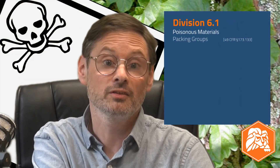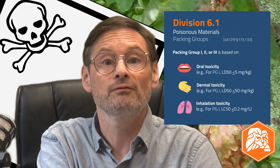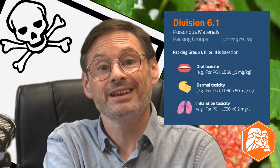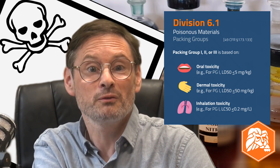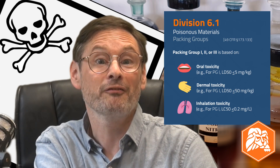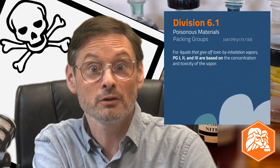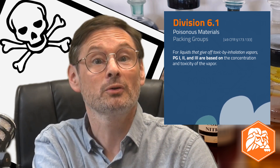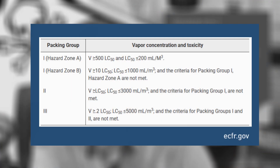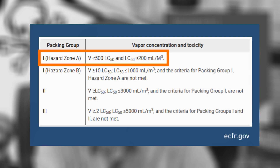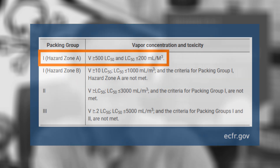For division 6.1 poisons, PG 1, 2, and 3 assignments are based on oral toxicity and dermal toxicity expressed as a median lethal dose (LD50), and inhalation toxicity expressed as lethal concentration (LC50). There are alternate packing group 1, 2, and 3 designations for division 6.1 liquids that give off vapors that are poisonous when inhaled. For these materials, packing group 1 is split into two hazard zones, A and B. Having four categories instead of three provides a very clear upper range that distinguishes the most severe inhalation hazards — with these materials, the less uncertainty the better.